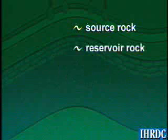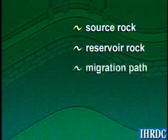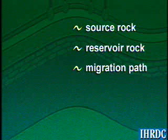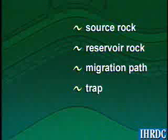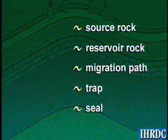First, a source rock containing enough organic material to be a significant source of petroleum. Second, a reservoir rock, porous and permeable, into which we will drill our well. Third, a permeable path for the petroleum to migrate from the source rock where it is generated to the reservoir rock from which we hope to produce it. Fourth, a trap limiting the reservoir in some way. And fifth, a seal to prevent further migration of the petroleum out of the reservoir trap.